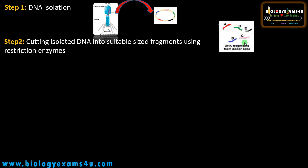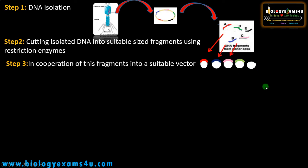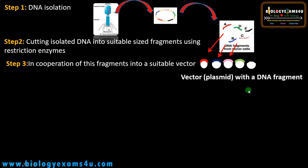Next, we incorporate these fragments into a suitable vector like a plasmid, cosmid, etc. I have introduced each gene into a different plasmid vector — you can see the colors A, B, C, D, and E. As discussed in the previous video, we use restriction enzymes and ligases for making this recombinant vector. Now we have a plasmid vector with our DNA fragment.